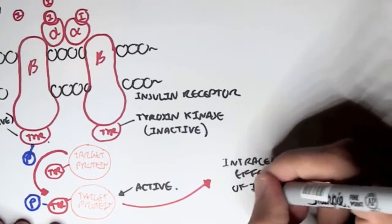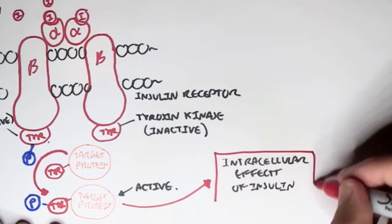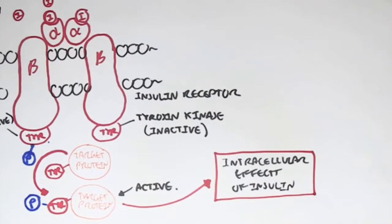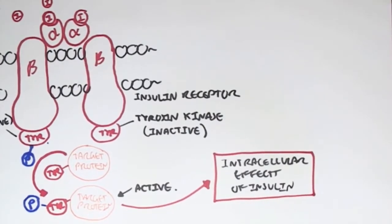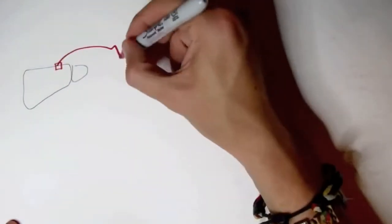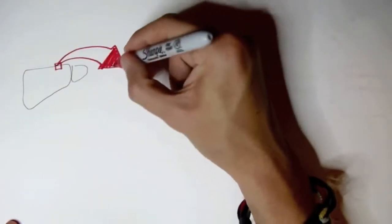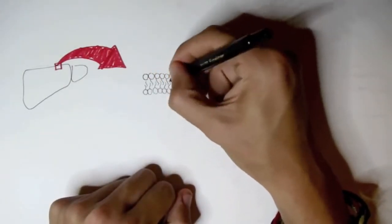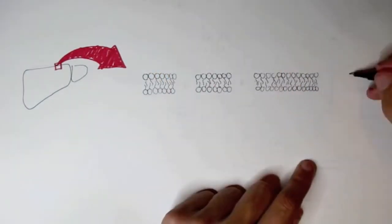That was a brief overview, but now let's look at this tyrosine kinase receptor in a bit more detail. Let's look at it again in a bigger picture — here we have the liver, and we'll cut a cross-section to look at the cell membrane of the hepatocytes.